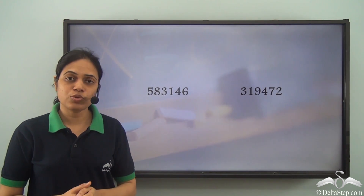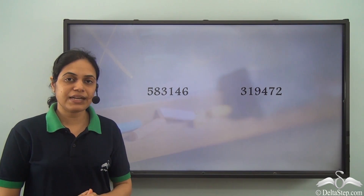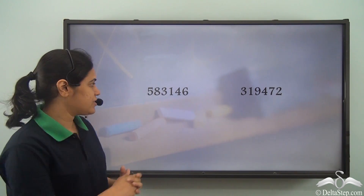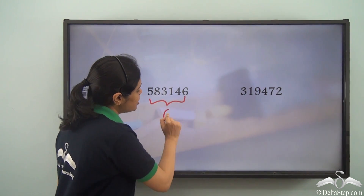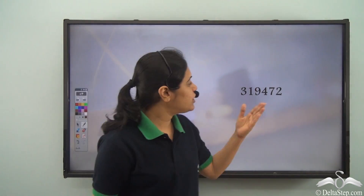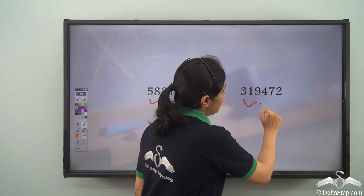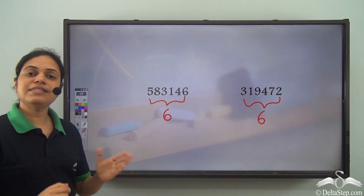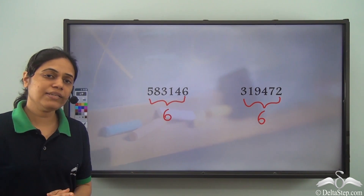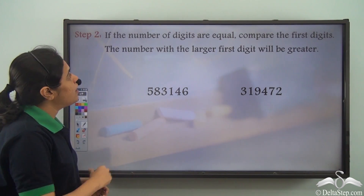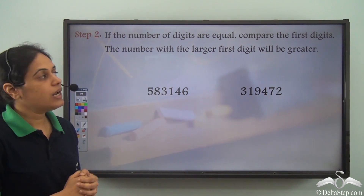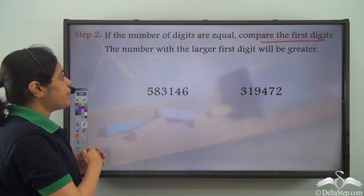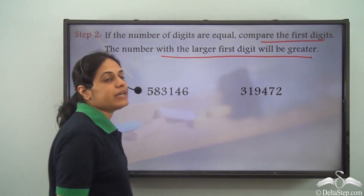Now what about these two numbers? Which of the two numbers is greater? The first step is to count the number of digits. In this case there are six digits, and in this case as well there are six digits. So the number of digits are equal. If the number of digits are equal, compare the first digits — the number with the larger first digit will be greater.